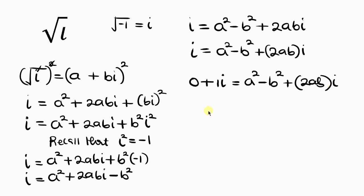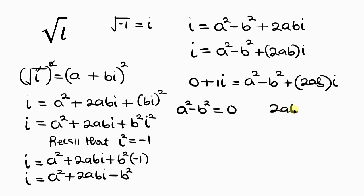Our next step is to compare the left-hand side to the right-hand side, equating real parts and imaginary parts separately. The real parts give: a² − b² = 0. The imaginary parts give: 2ab = 1.